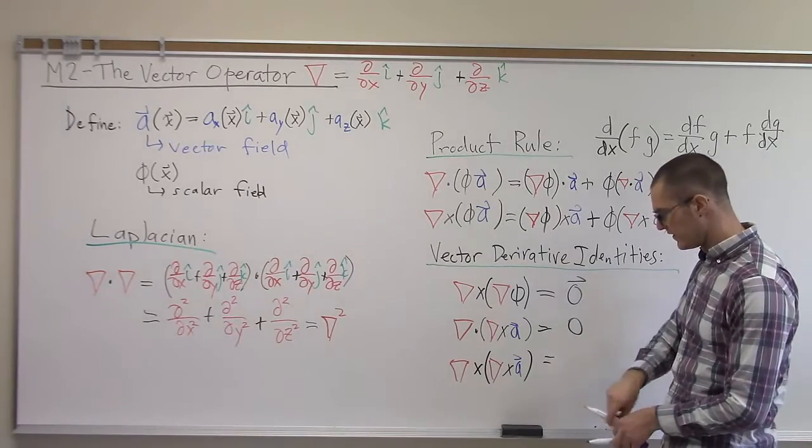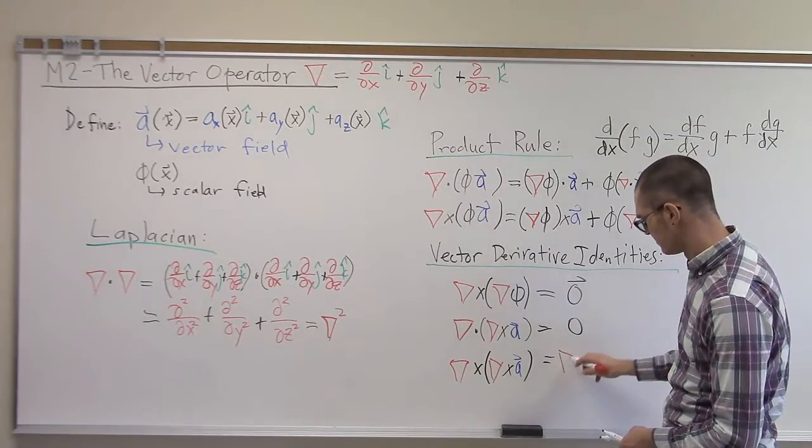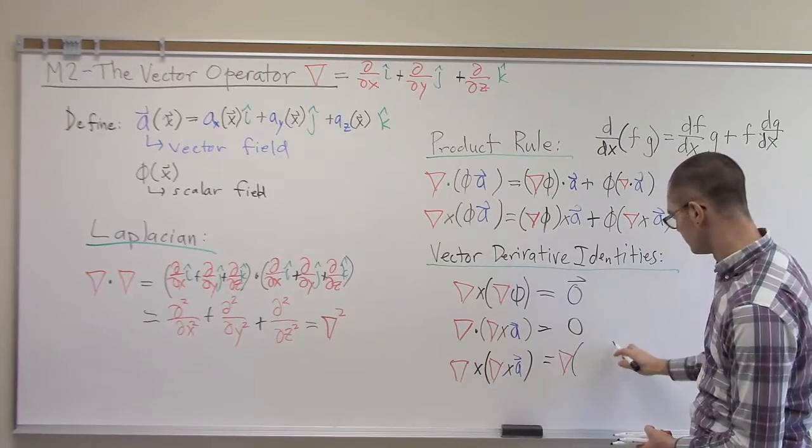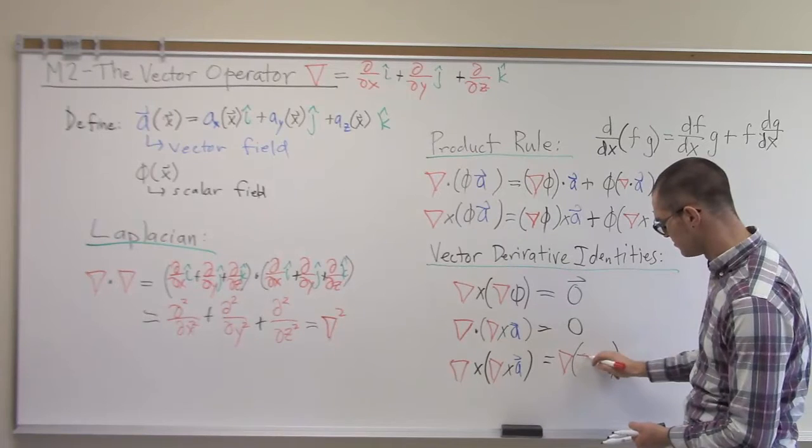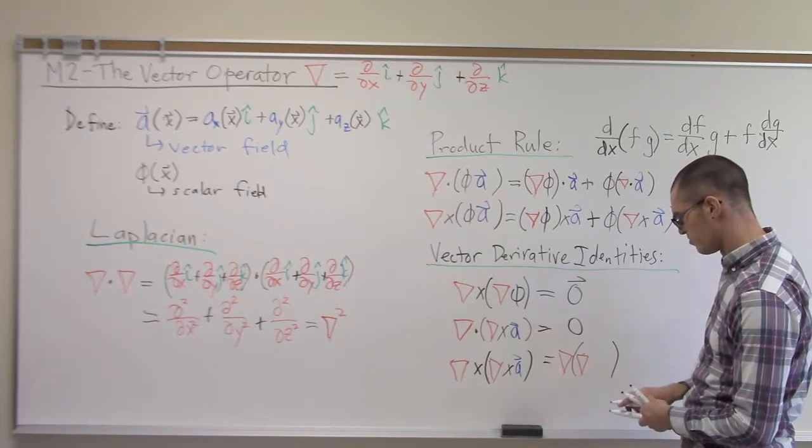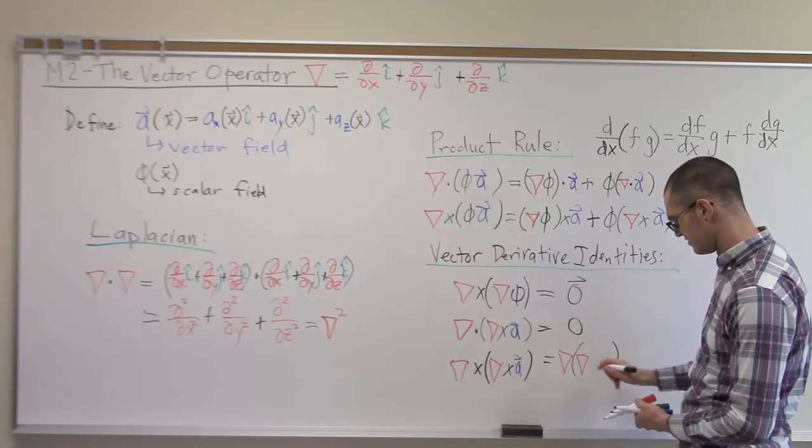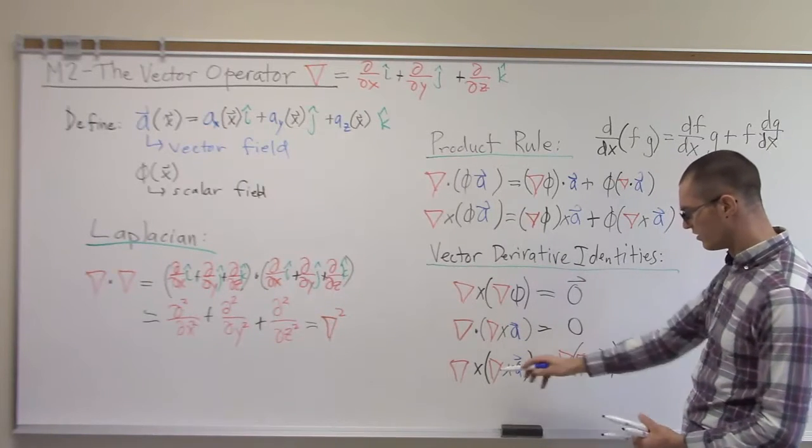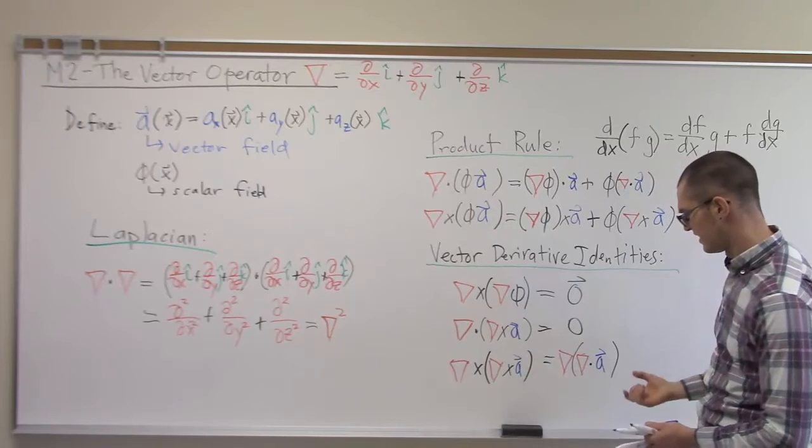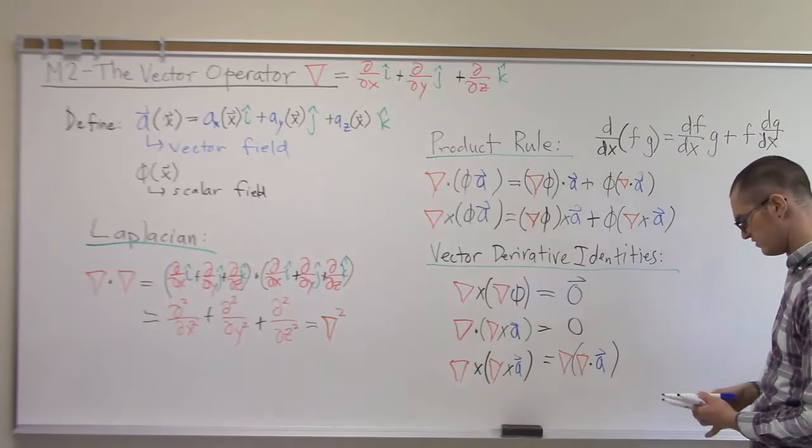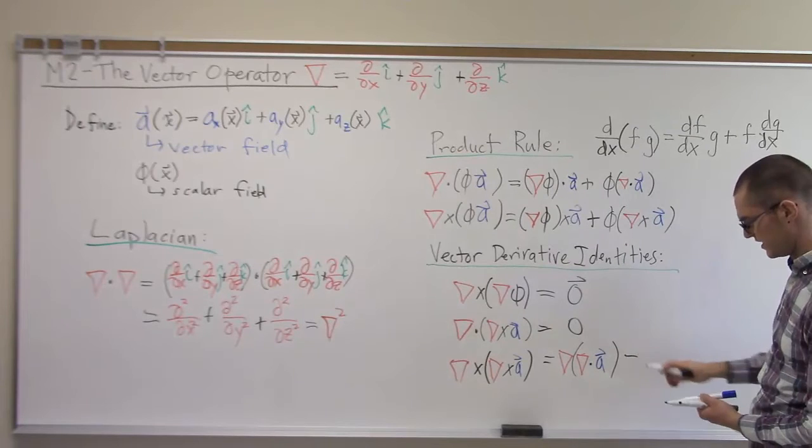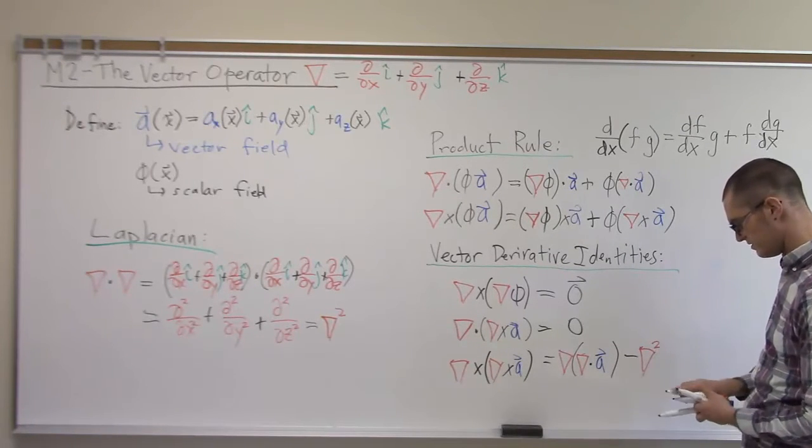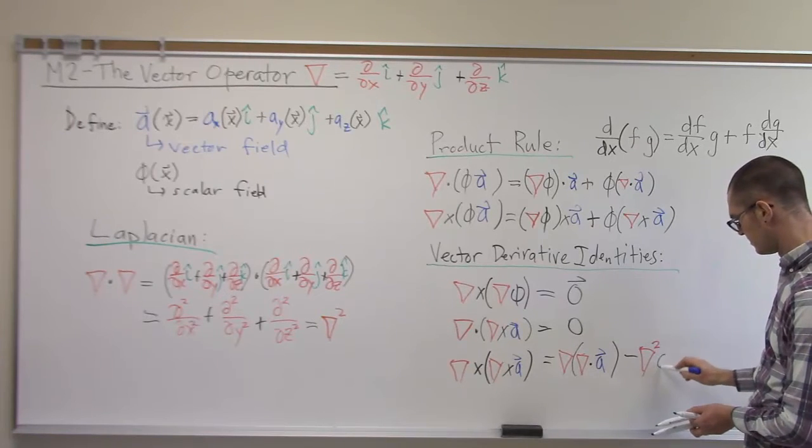When we're constructing solutions to these fields, sometimes we can get some traction by rewriting an operation in a different way. So the curl of the curl is equal to the gradient of the divergence minus the Laplacian of a.